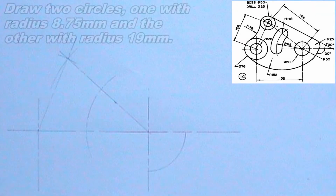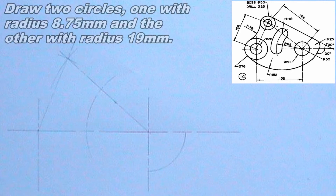I will draw two circles: one with radius 8.75mm and the other with radius 19mm. The two circles should have a common center. The center of the circles should be the point where the left vertical line intersects the horizontal line.